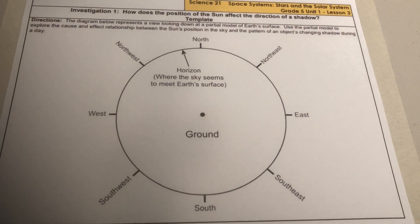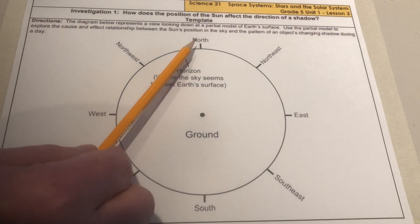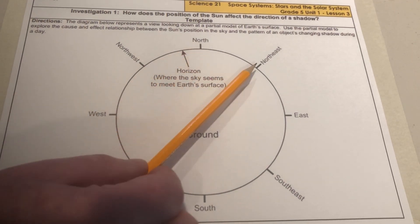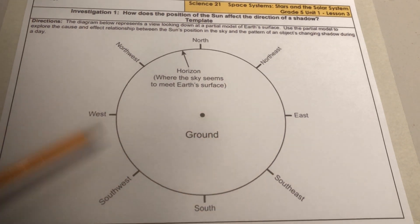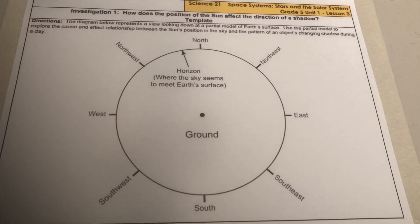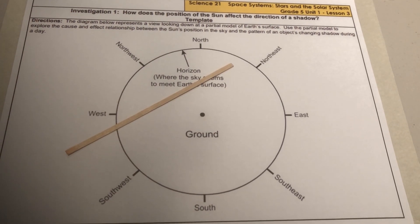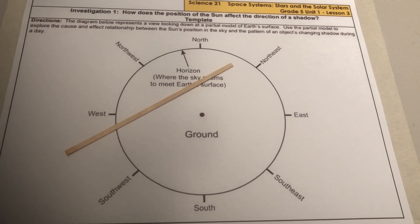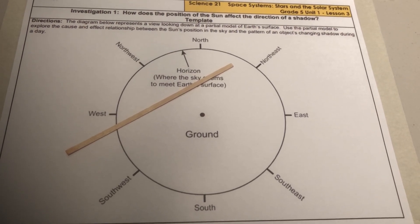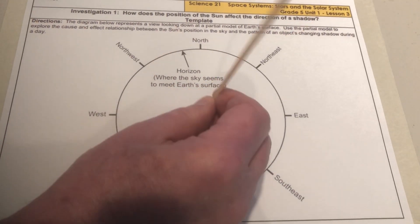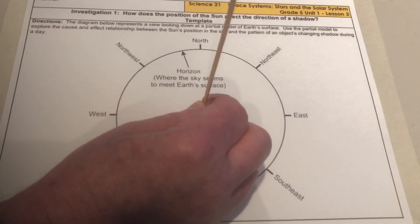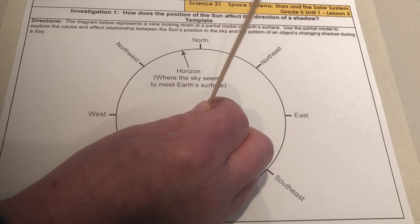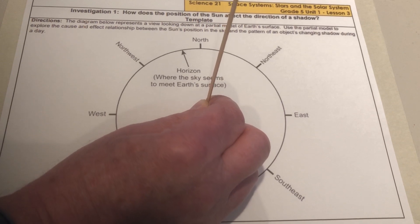On our model, you can see compass directions have been labeled for reference: north, northeast, east, and so on to northwest. The object that will cast the shadow in the model will be a wooden stirrer. This object on the real Earth could be something like a flagpole. I'm going to place the stirrer on the large dot in the center of the diagram, and I'll place it so that it is vertical, sticking straight up.